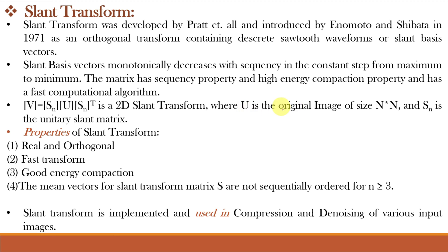If U is the original image of size n×n and S_N is the slant matrix, then the slant transformation is given by the standard equation. The properties of slant transform are: it is real and orthogonal, it is a very fast transform, it has good energy compaction, and the mean vectors for the slant transform matrix are not sequentially ordered for N greater than or equal to 3. Applications include image compression and image denoising.